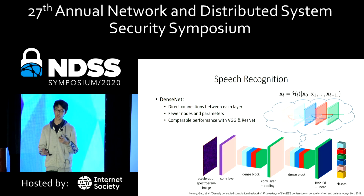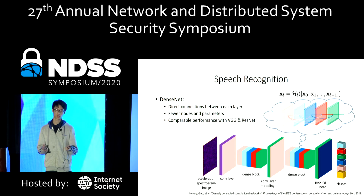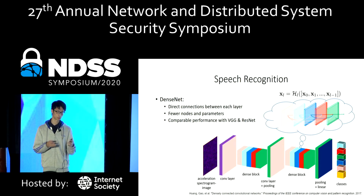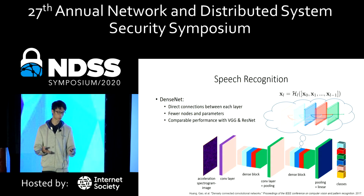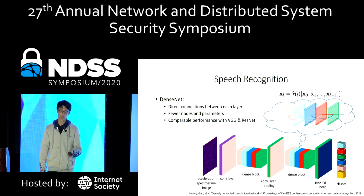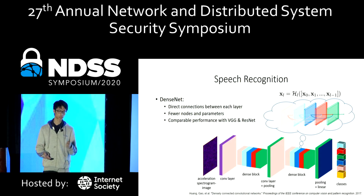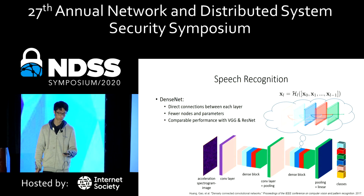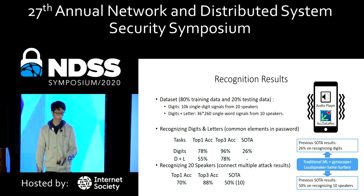To recognize the speech, we use DenseNet as our basic deep learning network. The reason we chose DenseNet over traditional networks like VGG or ResNet is that DenseNet introduces connections between each layer, so it does not need additional nodes to maintain information from previous layers.